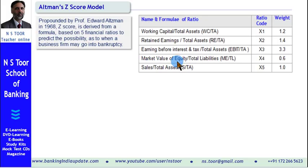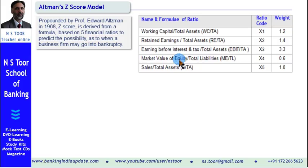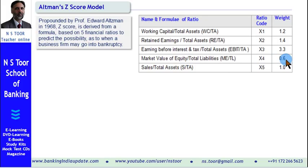The fourth ratio is market value of equity divided by total liabilities. Market value of equity means market capitalization — the shares of such companies listed on a stock exchange. What is the market value of that equity divided by total liabilities? This is represented by x4 and its weightage is 0.6.